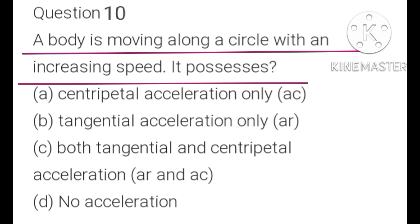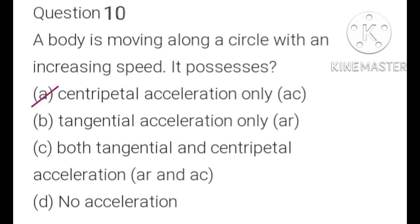Question 10: A body is moving along a circle with an increasing speed. It possesses: A) centripetal acceleration only, B) tangential acceleration only, C) both tangential and centripetal acceleration, D) no acceleration. We know that when a body moves in a circle and its speed is increasing, it possesses both tangential and centripetal acceleration. C is the correct option: a body moving along a circle with increasing speed possesses both tangential and centripetal acceleration.